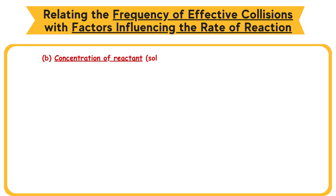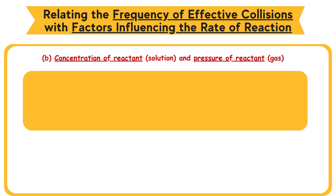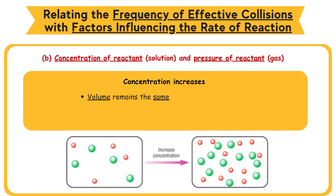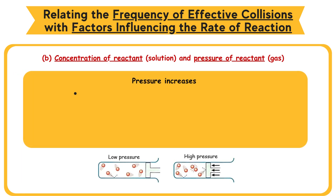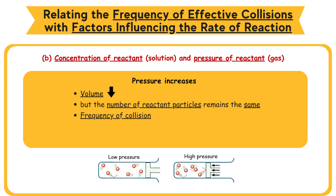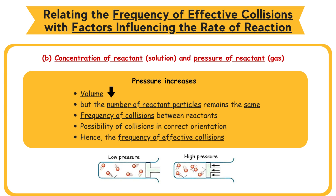b. Concentration of reactant (solution) and pressure of reactant (gas): An increase in concentration or pressure causes an increase in rate of reaction. When concentration increases, volume remains the same but the number of reactant particles increases. When pressure increases, the volume decreases but the number of reactant particles remains the same. The solution with higher concentration and gas under higher pressure have a larger number of particles per unit volume. Frequency of collisions between reactants increases. Possibility of collisions in correct orientation increases. Hence, the frequency of effective collisions increases.